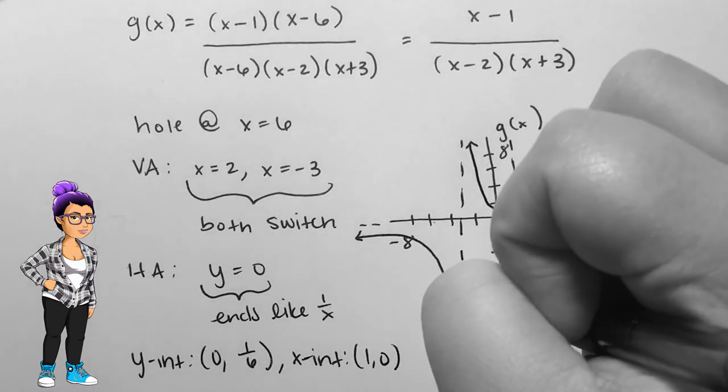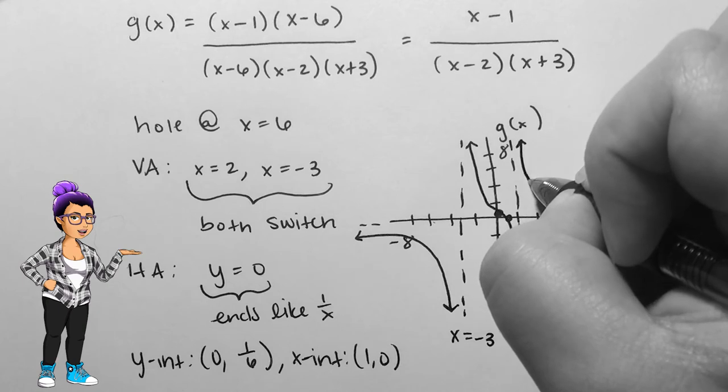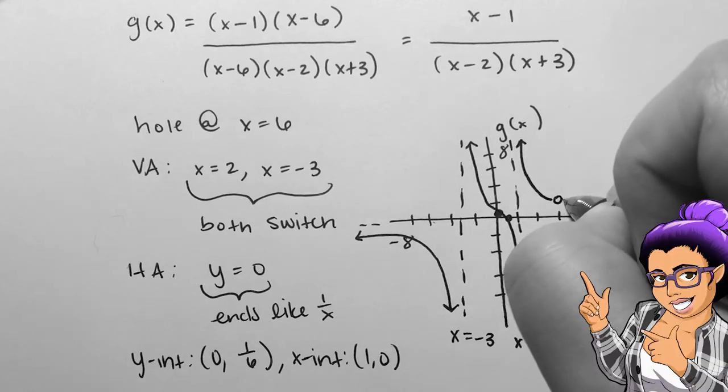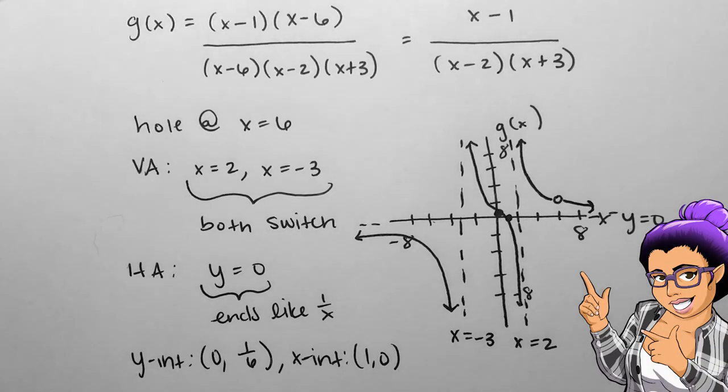cross at the x-intercept, switch behavior at the next asymptote, ending the graph above the horizontal asymptote with a nice open hole where x is 6.